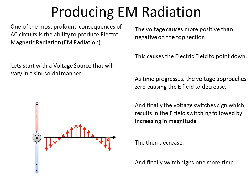This radiation propagates in this direction, in that direction, toward us, away from us — all directions that are perpendicular to the antenna, where the field is parallel to the oscillation. The radiation gets radiated out away from the source in all those perpendicular directions.